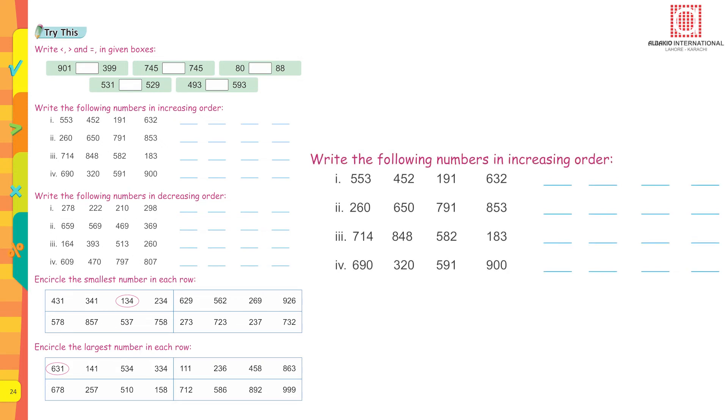Write the following numbers in increasing order: 553, 452, 191, 632. In increasing order, you have to write the smallest number first. 191 is the smallest, then comes 452, then 553, and at the end you write 632. This is how you are going to do sum number 2, 3, and 4.